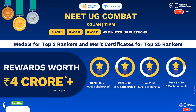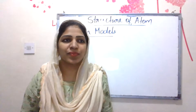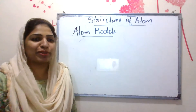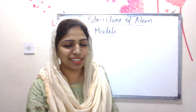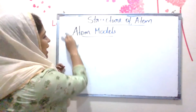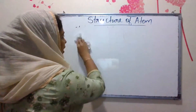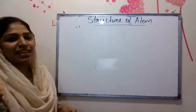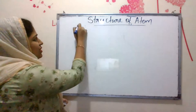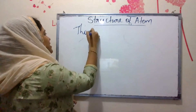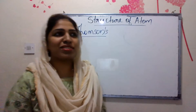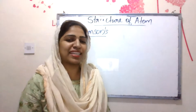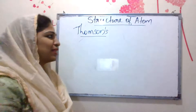Let's take a look at the structure of atoms. In Part 2 of the video, we will focus on the atom models. There are three atom models. The first is Thomson's Model of Atom. Thomson's model of atom was postulated by J.J. Thomson. J.J. Thomson discovered electrons.